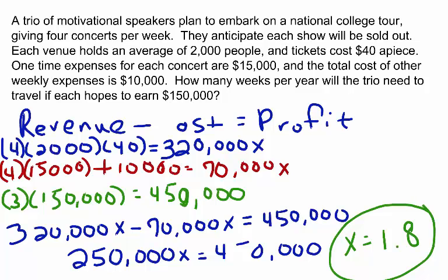If you'd like to check your answer, simply plug in 1.8 for X and then solve. $250,000 times 1.8 equals $450,000. So we know that our answer is correct.